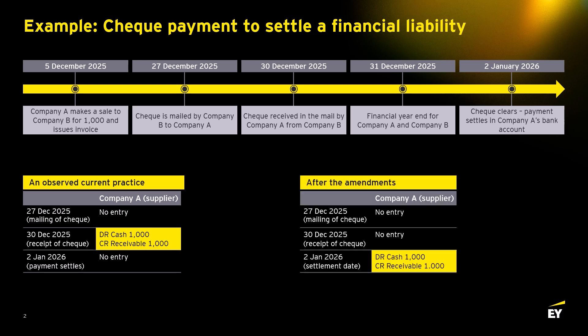Following the amendments to IFRS 9, the receivable can only be de-recognized when Company A's rights to the contractual cash flows on the receivable expire or are transferred. Therefore the increase in cash is reflected by Company A once the payment settles on the 2nd of January and the cash is in Company A's bank account.